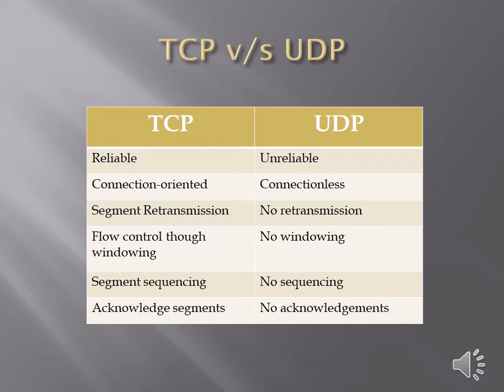Regarding acknowledgement segments: in TCP, segments are acknowledged — whenever a segment is received at the receiver end, it sends an acknowledgement to the sender. But in UDP there are no acknowledgements.